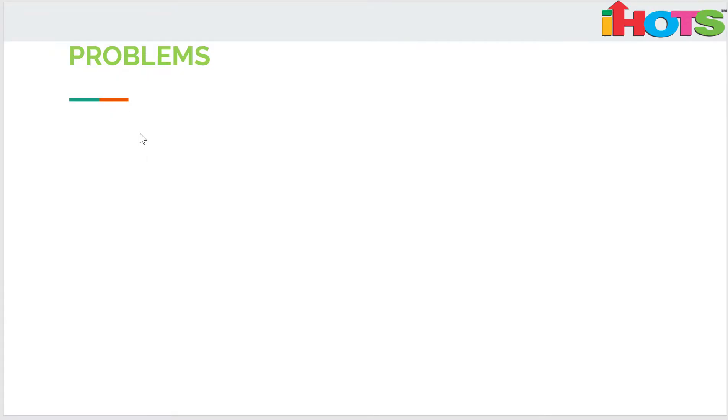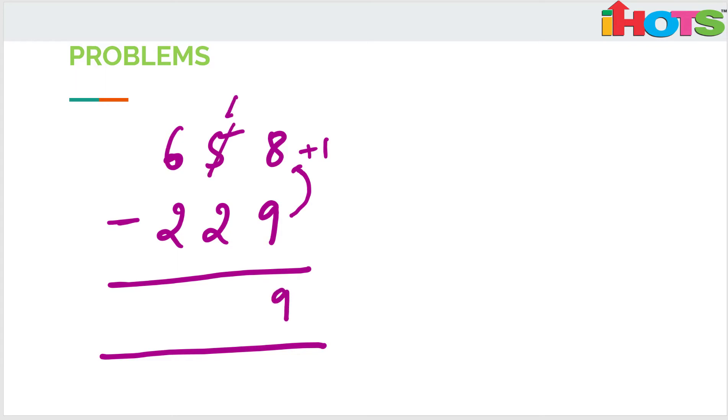So the first question is 658 minus 229. How will you do this? First, 8 minus 9. So 8 is less than 9, so you add the complement plus 1, which is 9. So this will reduce by 1, we already know this. 4 minus 2 is 2, 6 minus 2 is 4.